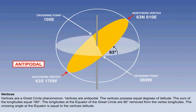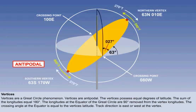The direction of the great circle can be determined from this crossing angle. At either vertex of the great circle, the track direction is either 090 or 270 degrees.